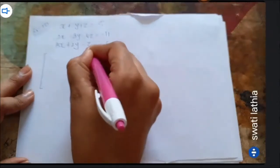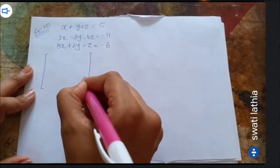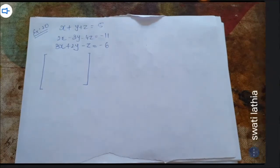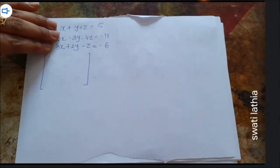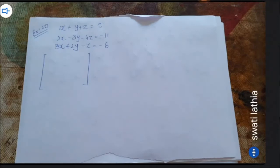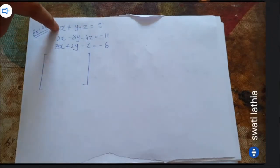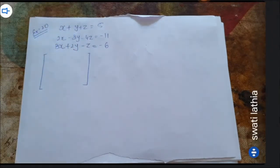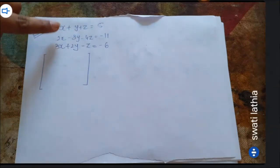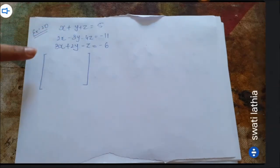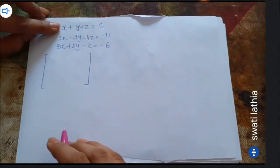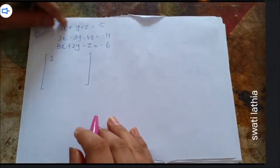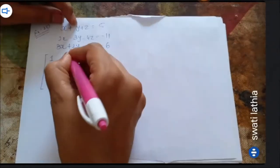We have a 3 by 3 system: 3 equations and 3 variables. Horizontally we have 3 values, 3 equations and 3 rows. So x has coefficient 1, y has coefficient 1.